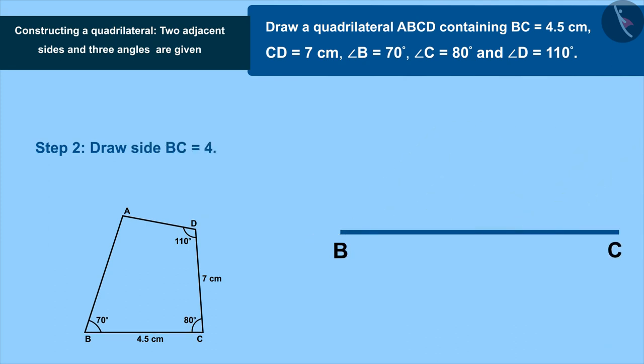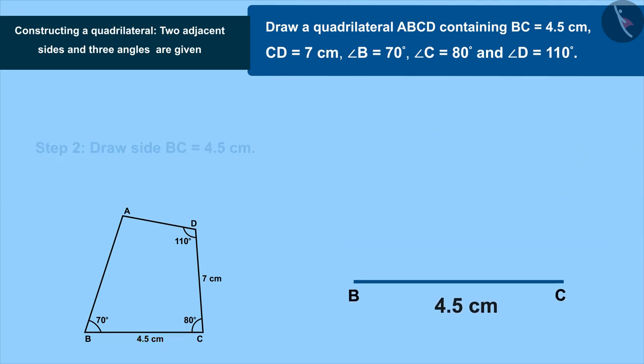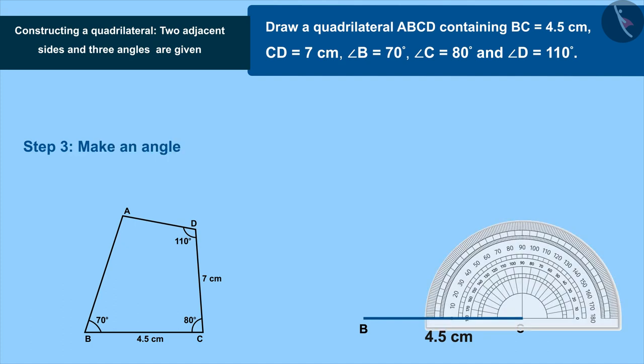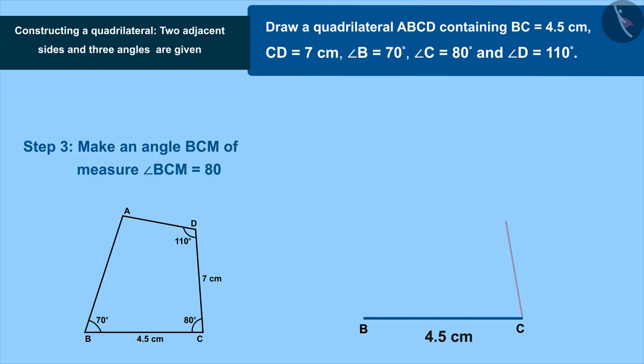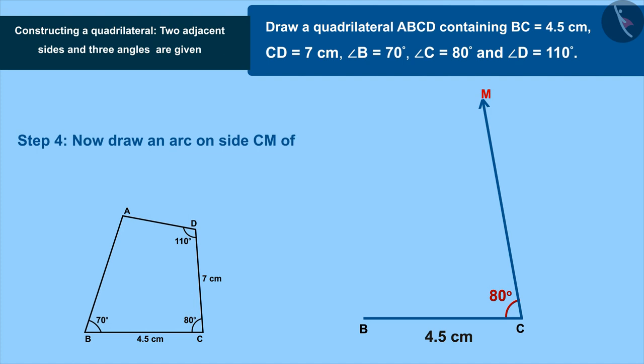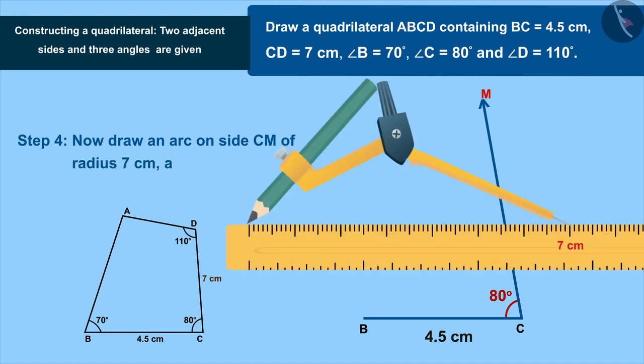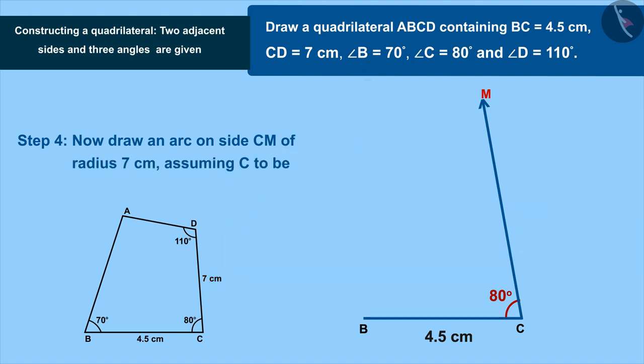Make an angle BCM of measure 80 degrees at point C. Now draw an arc on side CM of radius 7 centimeters with C as the center. Name the intersection of the arc and CM as point D.